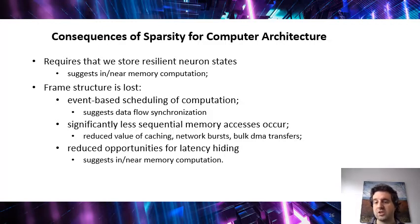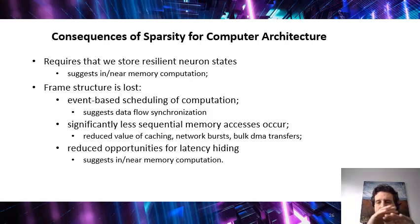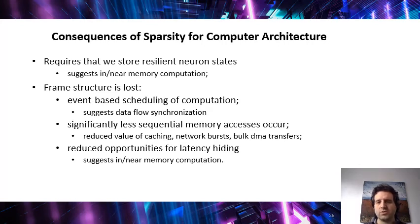So essentially, it suggests that we do in-memory or near-memory computation. And of course in the process, the frame structure is lost. So we are not processing a structure of data that is completely regular. We are now using a structure of data that is much more irregular, which means that we have a lot less locality of reference. We cannot use so many sequential memory accesses because we know we're not going through the whole image.